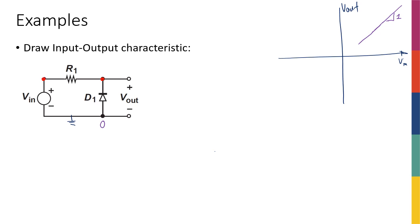The diode is going to turn on when V_out becomes negative V_D_on, so that the anode minus cathode voltage becomes V_D_on. V_D_on is that threshold voltage. If V_D_on is equal to 0.7 volts, then until V_out becomes negative 0.7, the diode is off. Since V_in equals V_out when the diode is off, it means that until V_in equals negative 0.7, everything is the same. So until negative V_D_on, things are the same.